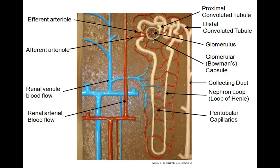Here is another model of the nephron, showing the renal arterial flow which leads into the afferent arteriole, into the glomerulus, and exiting out the efferent arteriole. The efferent arteriole leads into another blood network known as the peritubular capillaries, which surrounds the renal tubules.